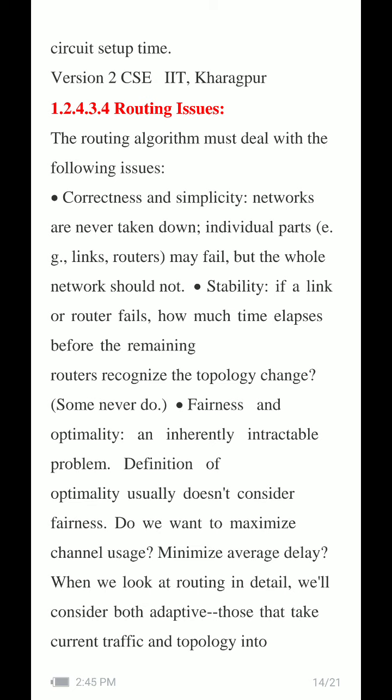The routing algorithm must deal with correctness and simplicity. Networks are never fully taken down — individual links or routers may fail, but the whole network should not. The second concern is stability: if a link or router fails, how much time elapses before the remaining routers recognize the topology change? The network should sustain its topology for some time even if a link or router fails.